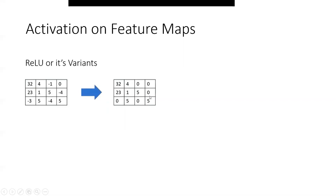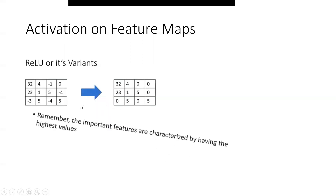What this signifies is that a pixel having a high value represents an important feature, and a pixel having a lower value represents a less important feature. The important features are characterized by having the highest value. That's the reason when we pass through the convolutional layer, we use the ReLU activation function, which normalizes the output layer and converts all negative values into zero.